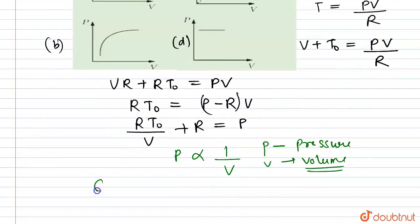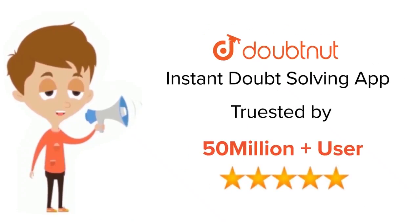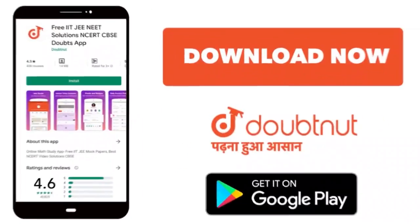So from this we can see that the correct option is option A. Thank you. For class 6 to 12, IIT-JEE and NEET level, trusted by more than 5 crore students, download Doubtnut app today.